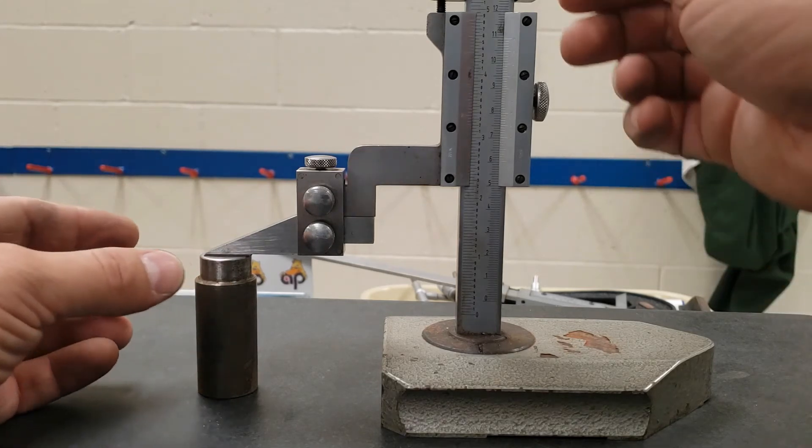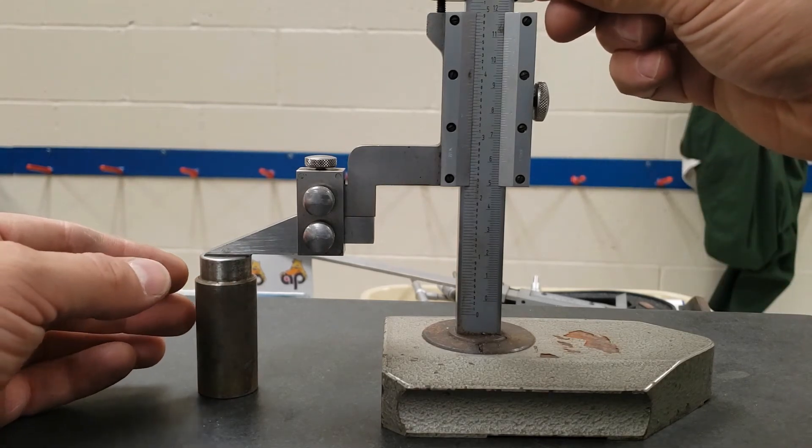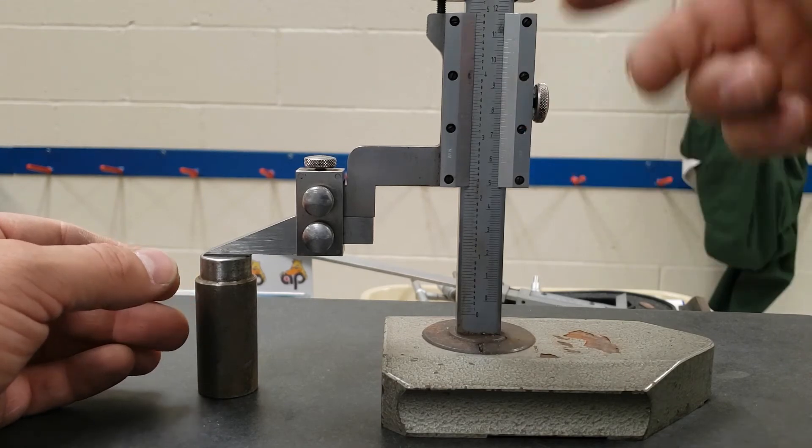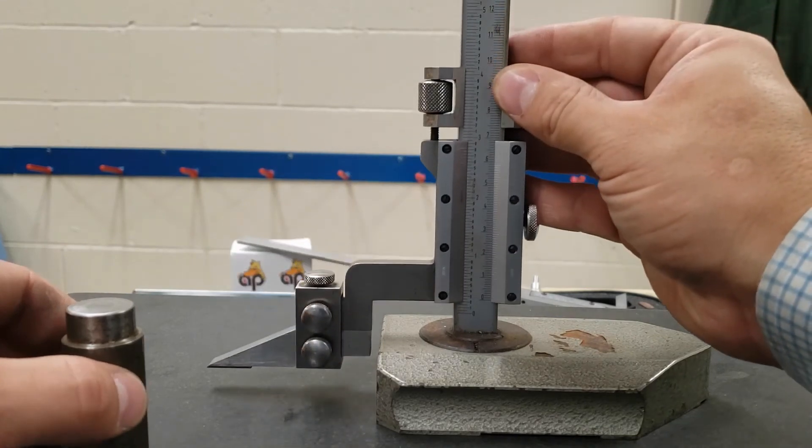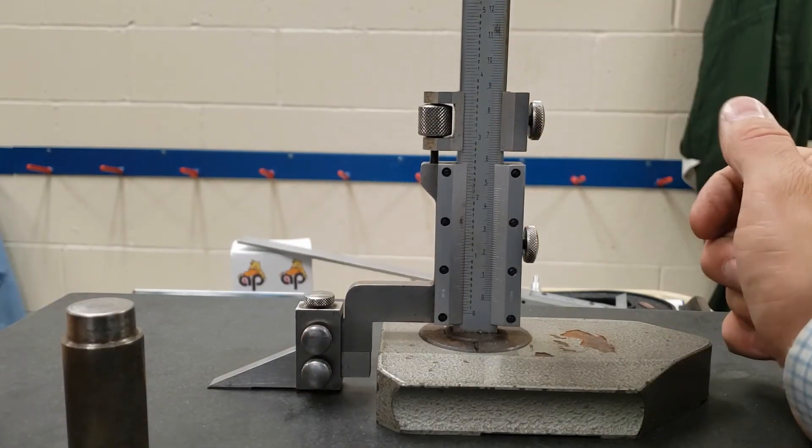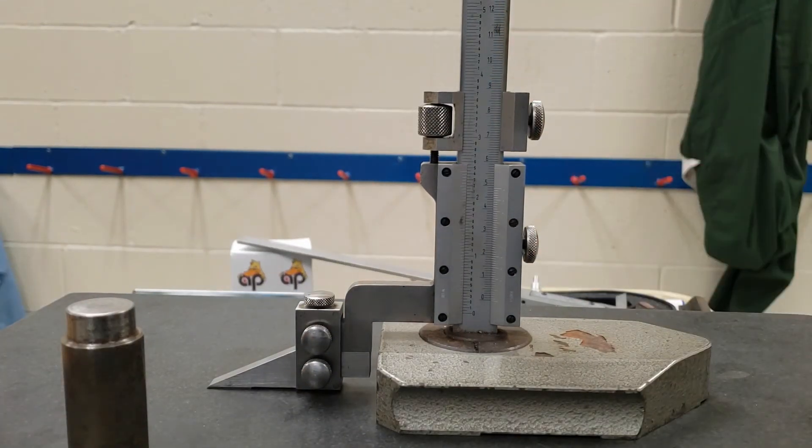Once finished, release these two locks, lift it up, remove the cylinder, carefully place it back onto the surface plate, and leave it for the next student.